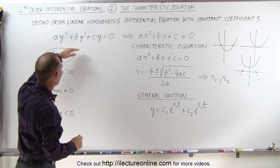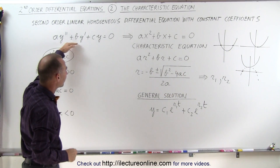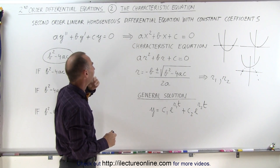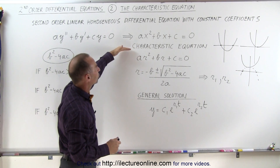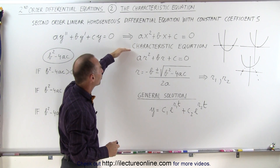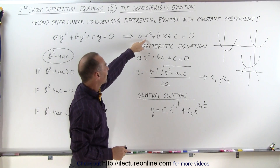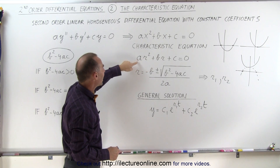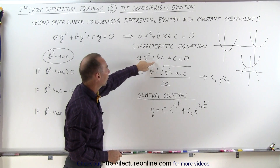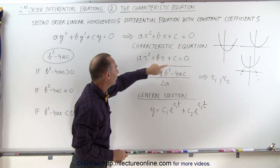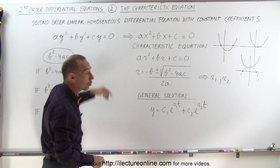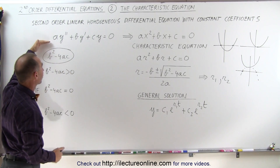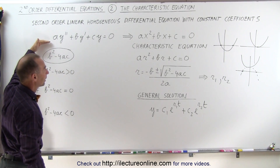Because this differential equation is very similar to the algebraic one, we can liken it to the characteristic equation. Instead of using X, we use R. So we have AR squared plus BR plus C, where A, B, and C are the coefficients of our differential equation.